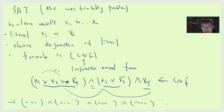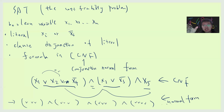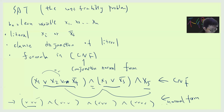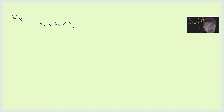This is called conjunction normal form. Usually, conjunction normal form where each clause has exactly three variables is called 3-SAT. So if each clause has exactly three variables, this is called 3-SAT. For example, a clause like (x4 or x5 or x6) is 3-SAT.